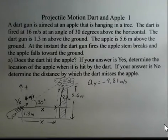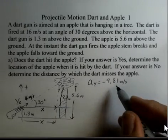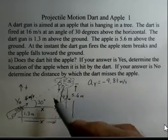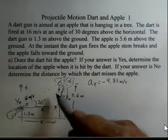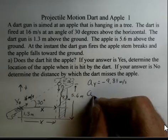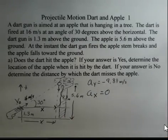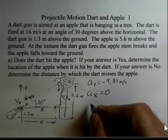We can write some things down for the dart. The acceleration in the Y direction is minus 9.81. That's for both the apple and the dart. The apple has no X motion. For the dart, we're going to ignore air resistance, so the acceleration in the X direction is 0.